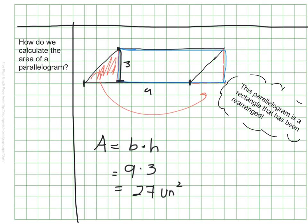Unlike a triangle, there's no step at the end where I'm dividing by two. It's just like finding the area of a rectangle, because that's all it really is — it's just been rearranged.